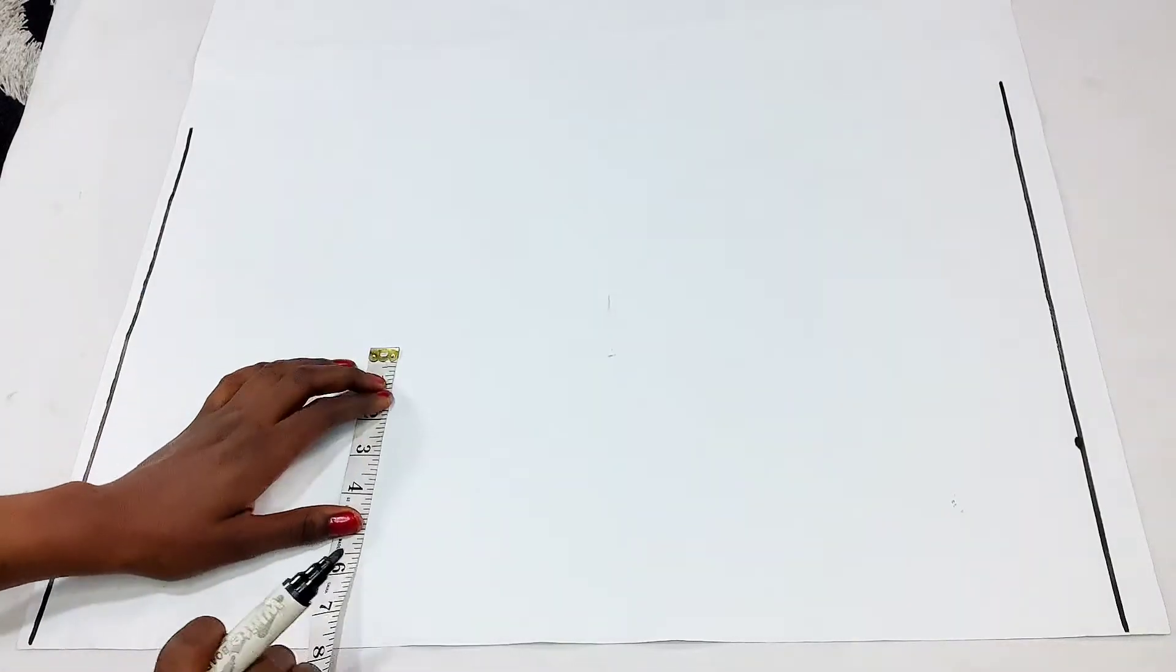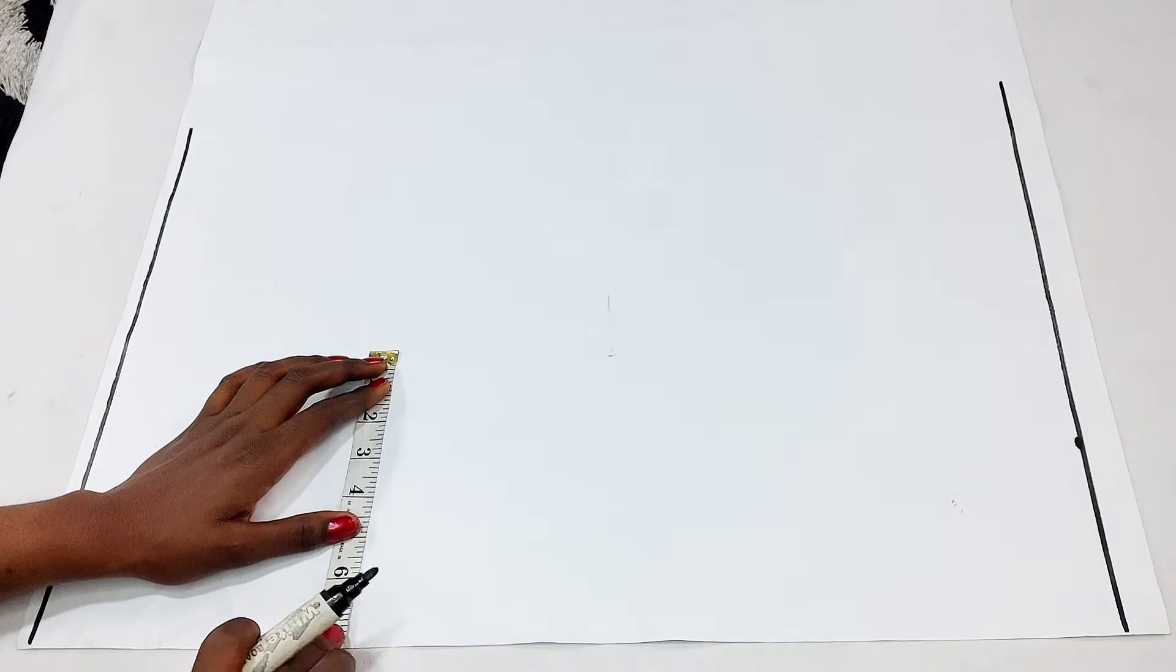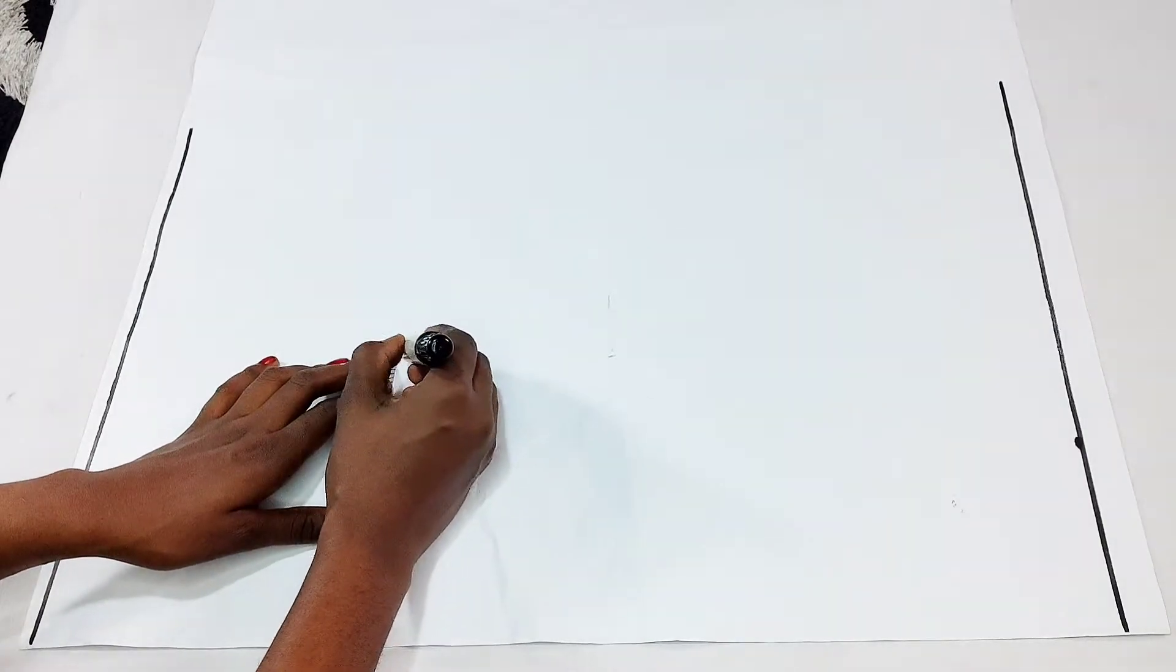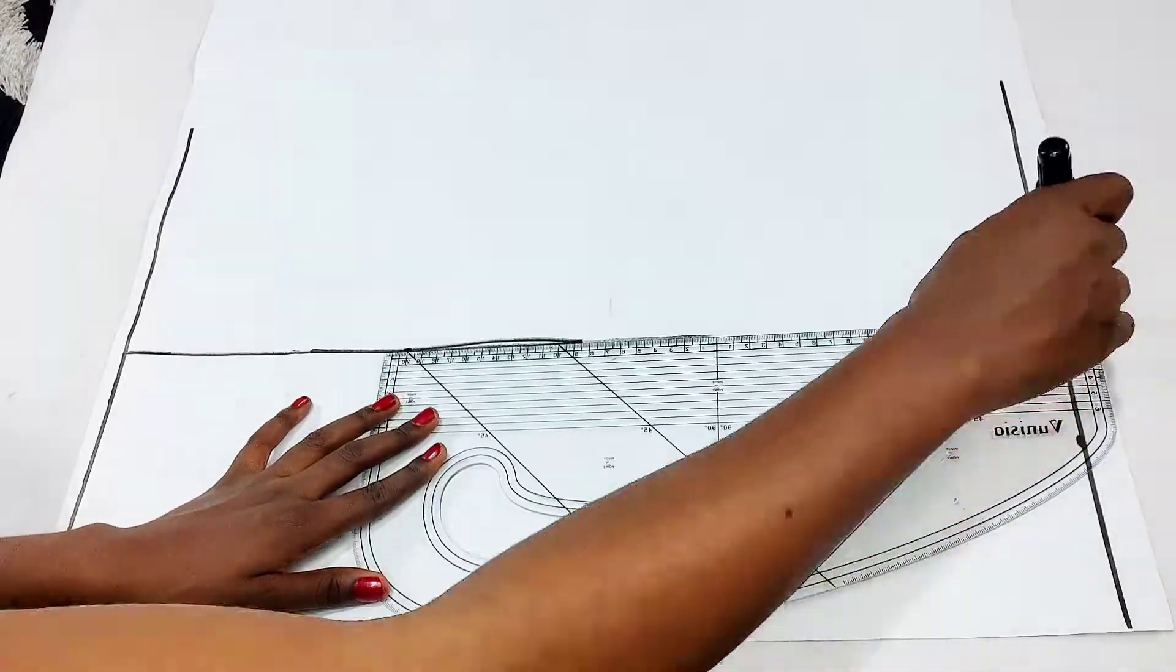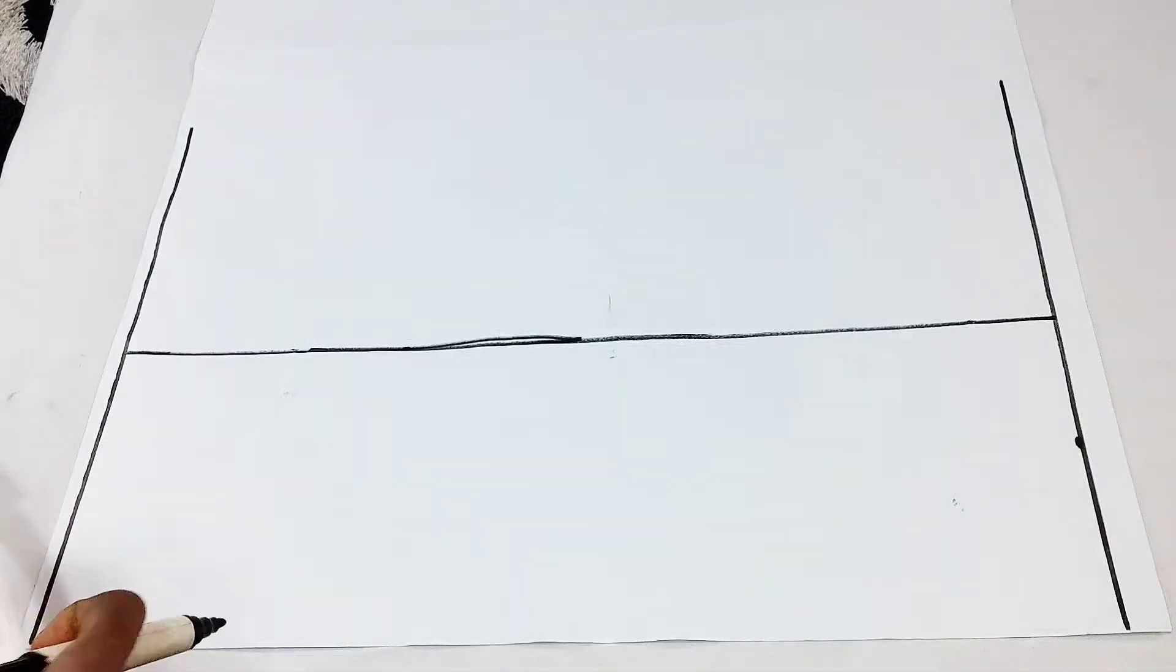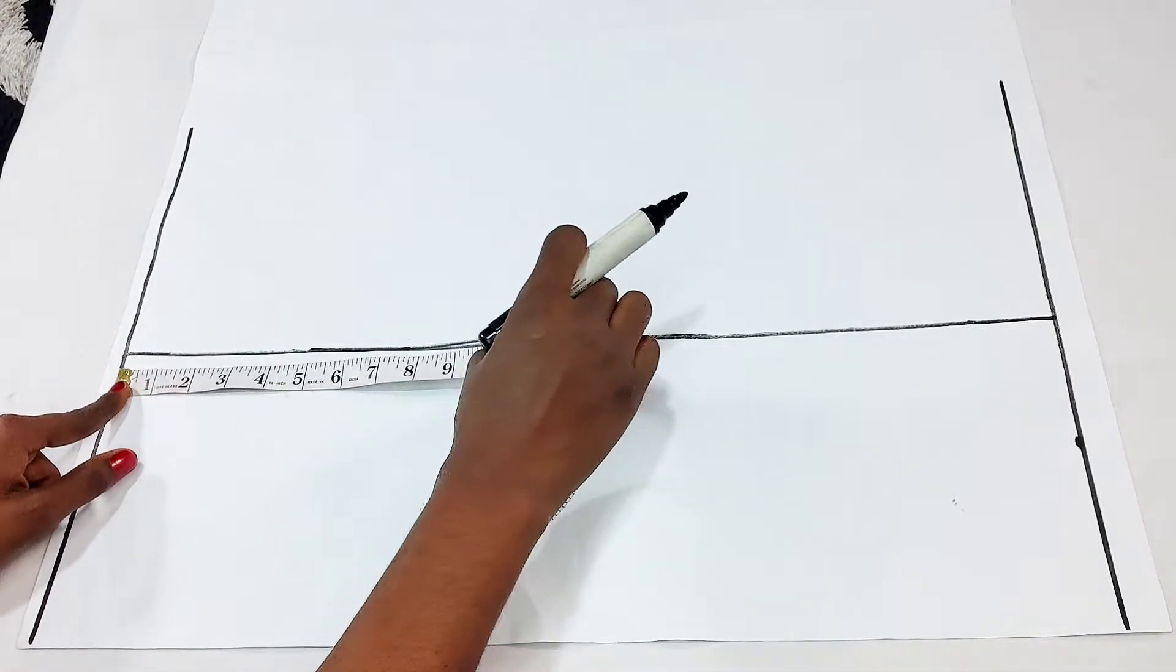I'm just going to be marking that line. Then for my center line, I made sure that where I'm putting my center line can contain half of my bicep measurement plus enough space for allowance.